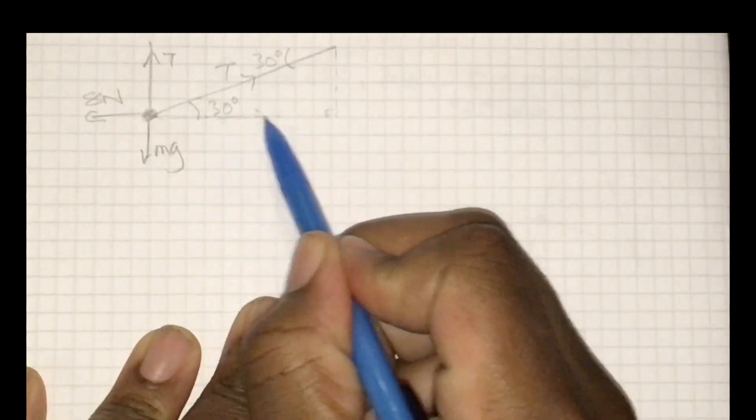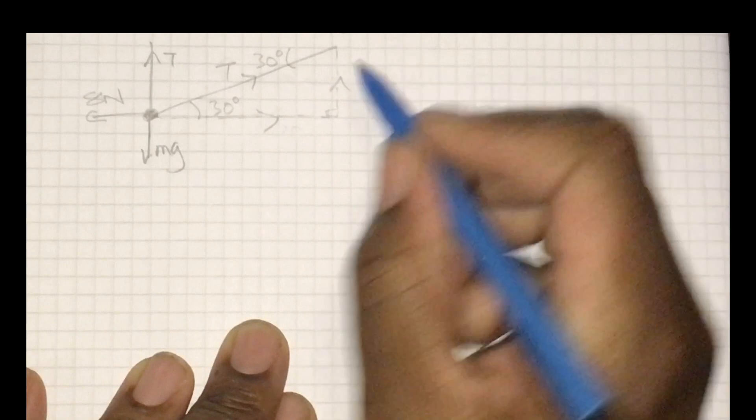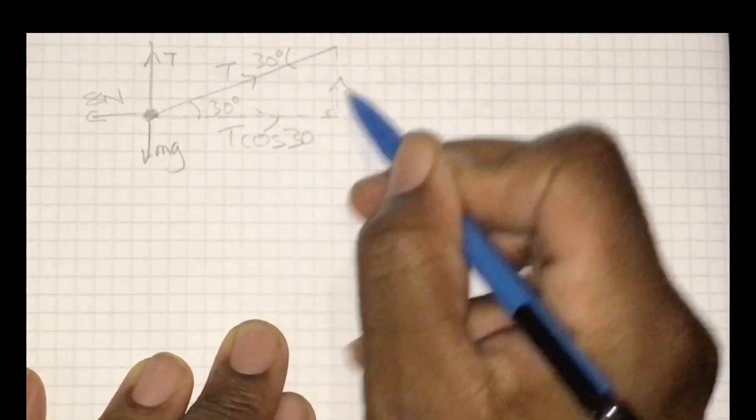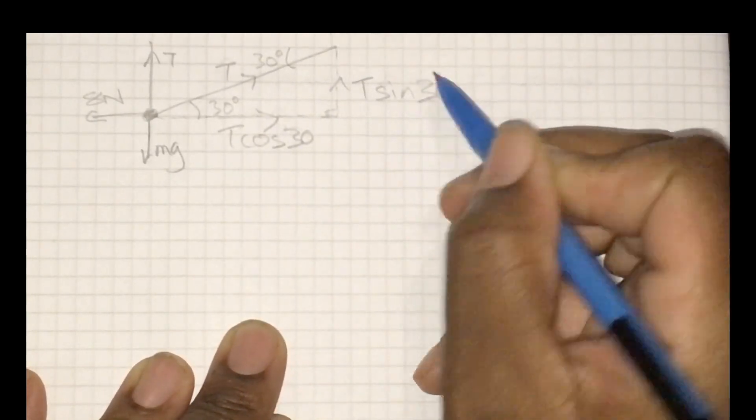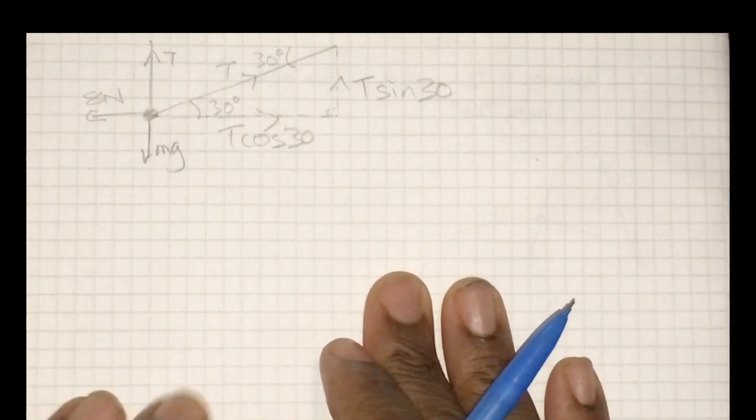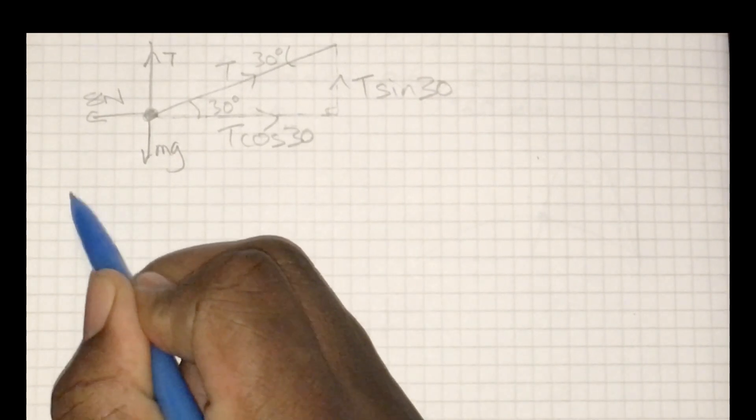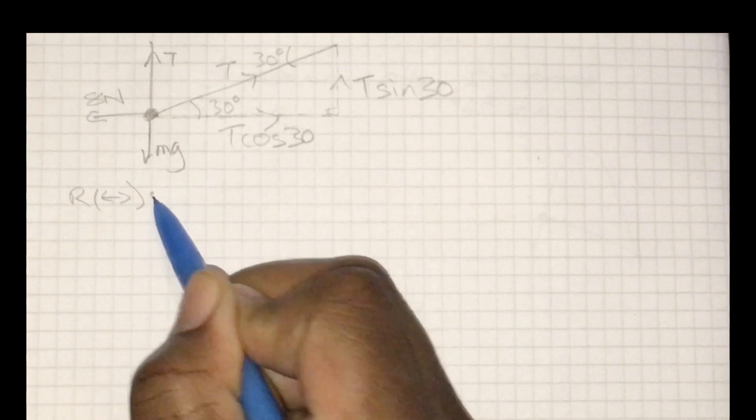With these unknowns we can go ahead and we can find the components for this diagonal force, so t cosine 30 and t sine 30. Now that I've got all of the forces and components accounted for, I'll go and do the regular thing of resolving both horizontally and vertically.